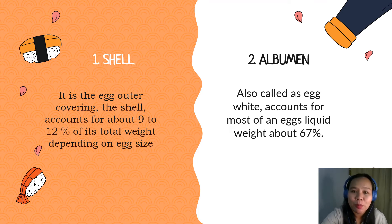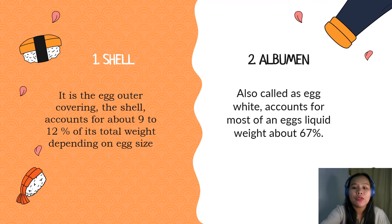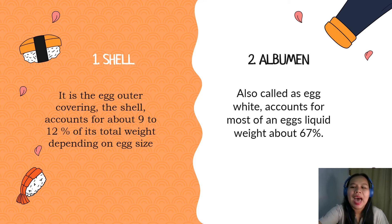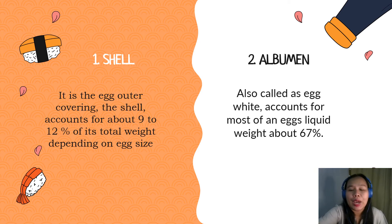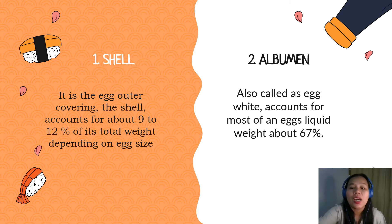Our next part is the albumen. It is also called as the egg white and accounts for most of an egg's liquid weight, which is about 67 percent. Albumen consists of two layers: the thin albumen, which is the narrow fluid layer next to the shell, followed by the thick albumen, which is the dense, matted, and fibrous capsule, which is attached to the yolk.